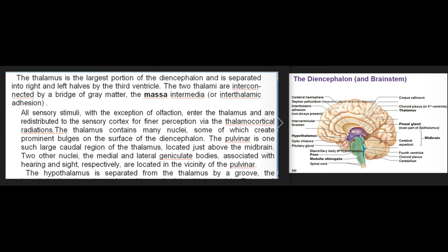The two thalami are interconnected by a bridge of gray matter called the massa intermedia or interthalamic adhesion. All sensory stimuli, with the exception of olfaction, enter the thalamus and are redistributed to the sensory cortex for finer perception via the thalamocortical radiations. The thalamus contains many nuclei, some of which create prominent bulges on the surface of the diencephalon. The pulvinar is one such large caudal region of the thalamus, located just above the midbrain. Two other nuclei — the medial and lateral geniculate bodies — are associated with hearing and sight, respectively, and are located in the vicinity of the pulvinar.